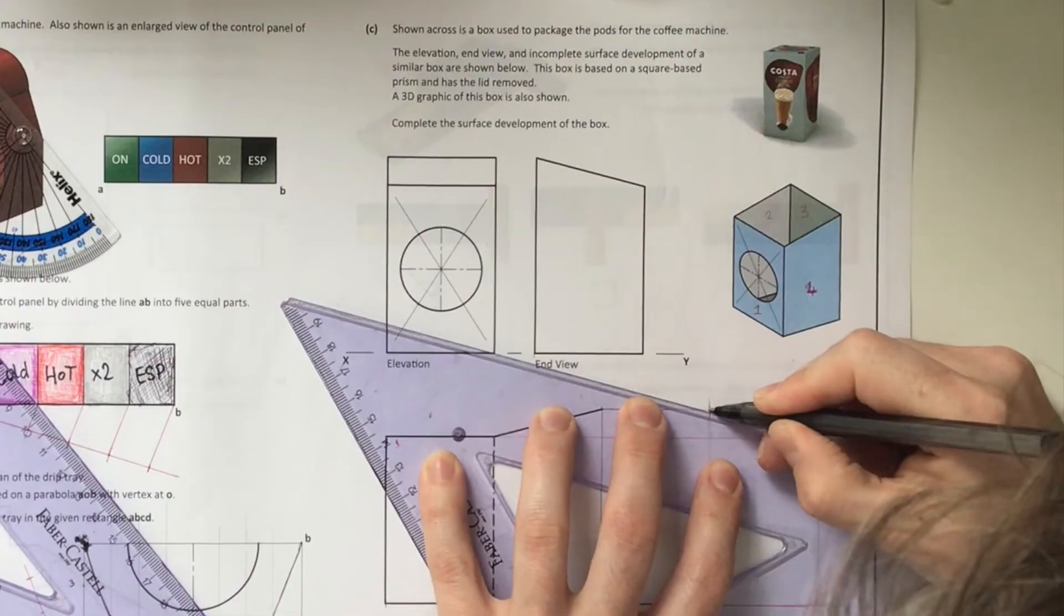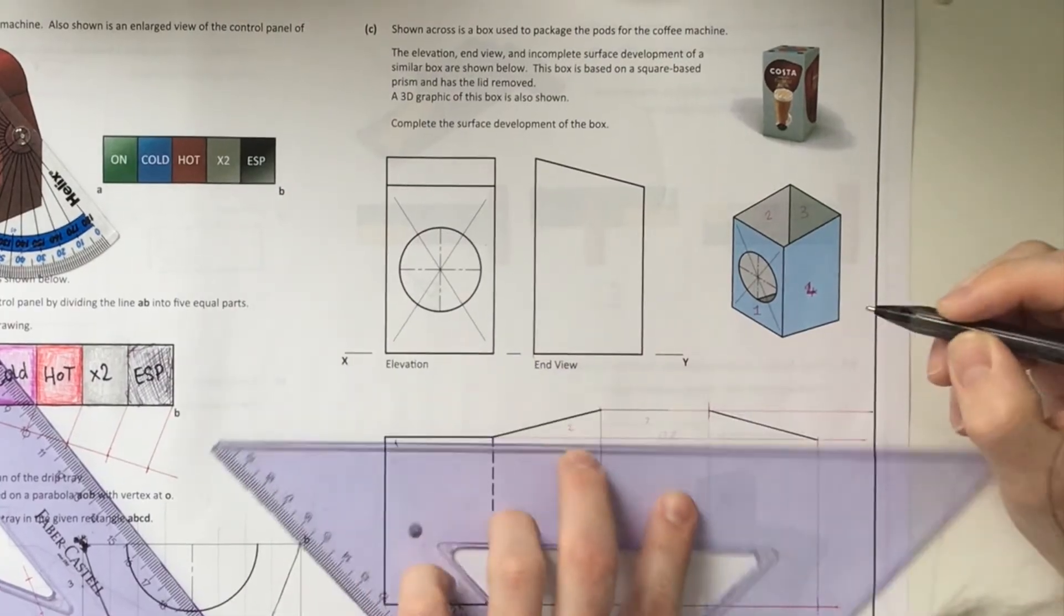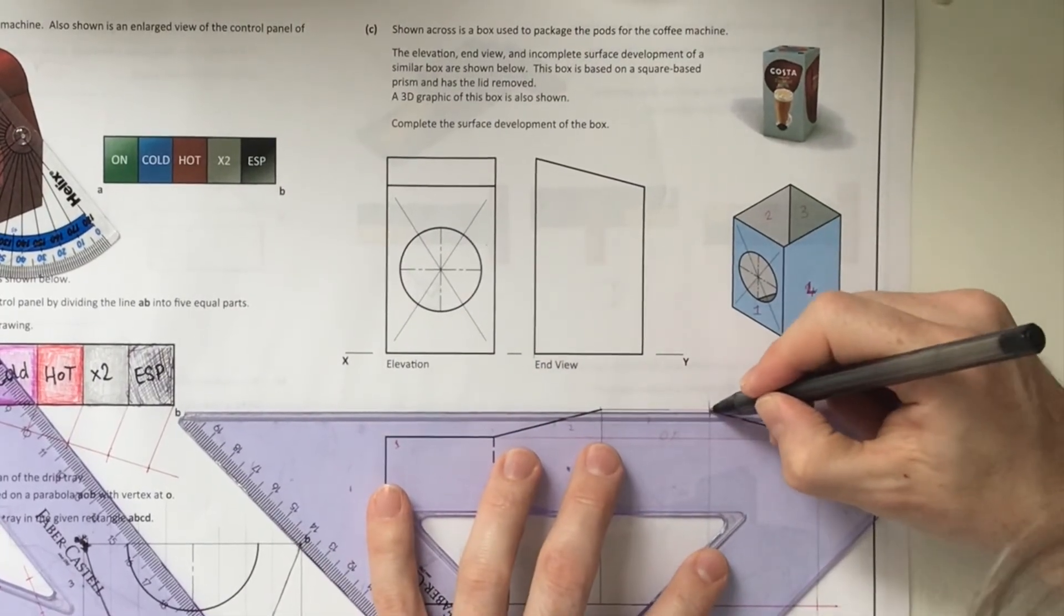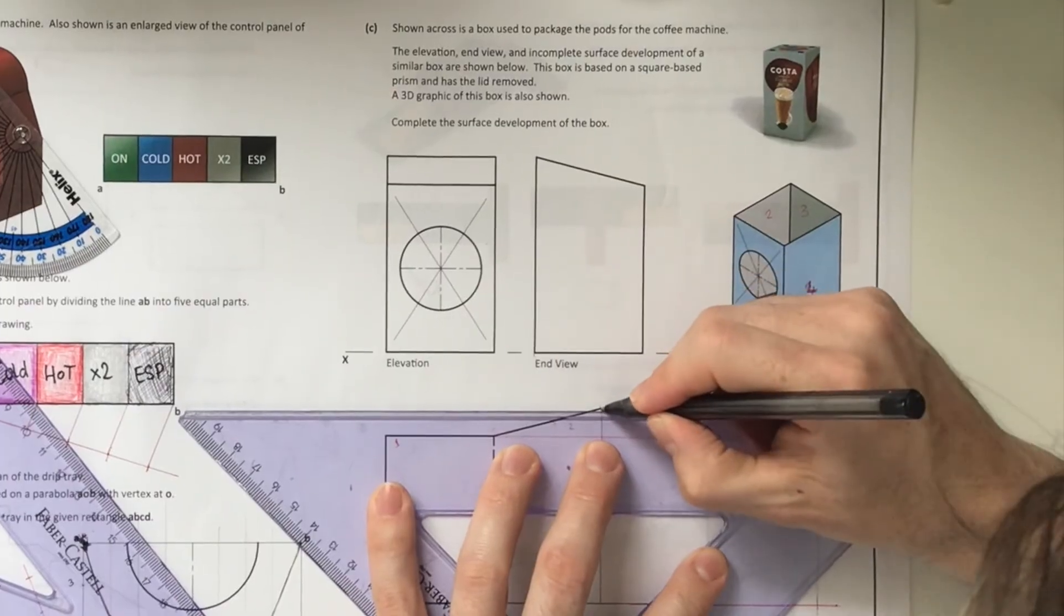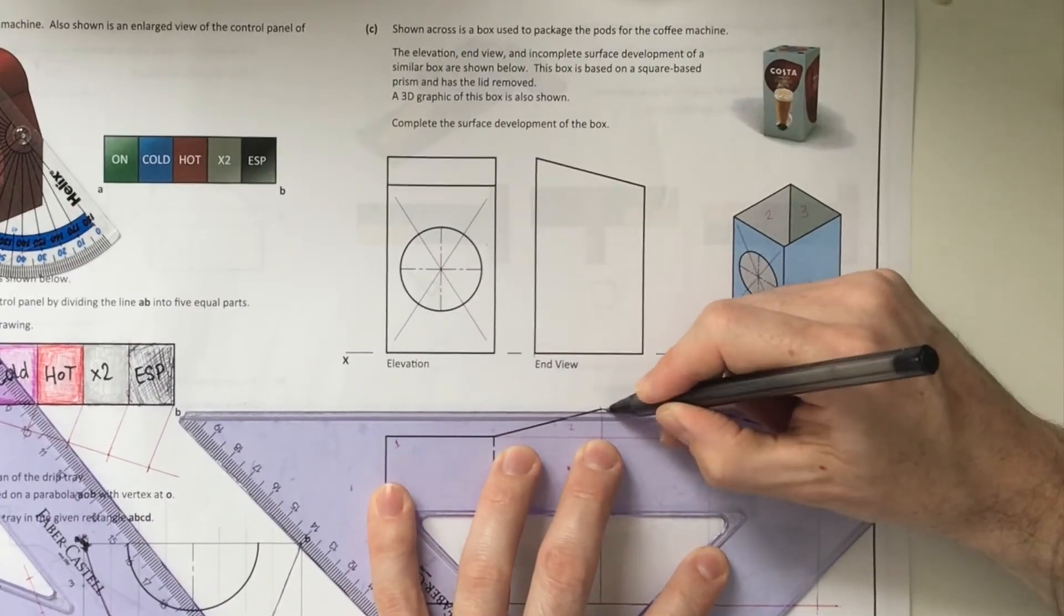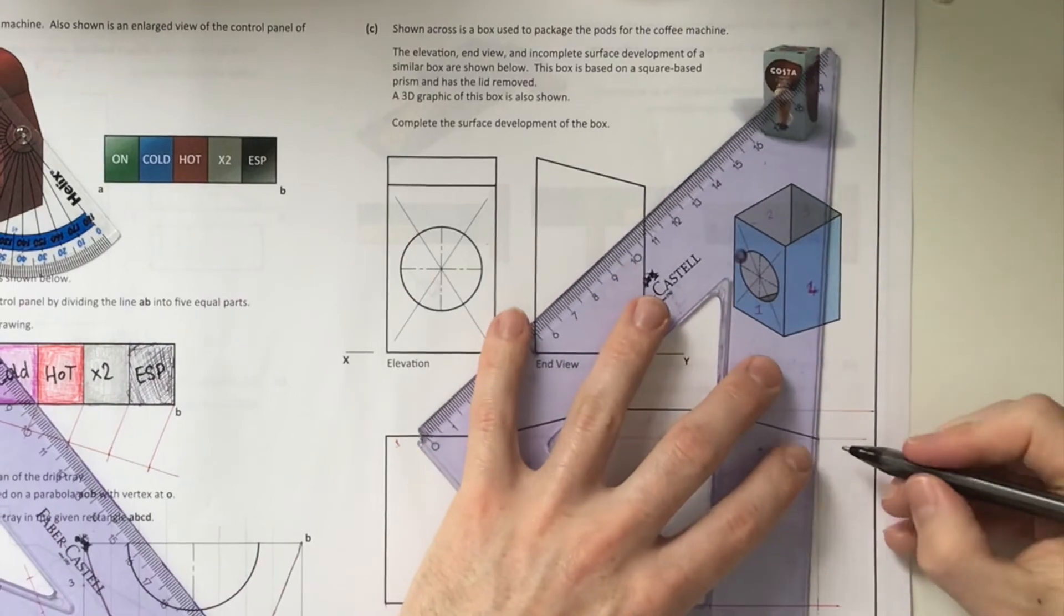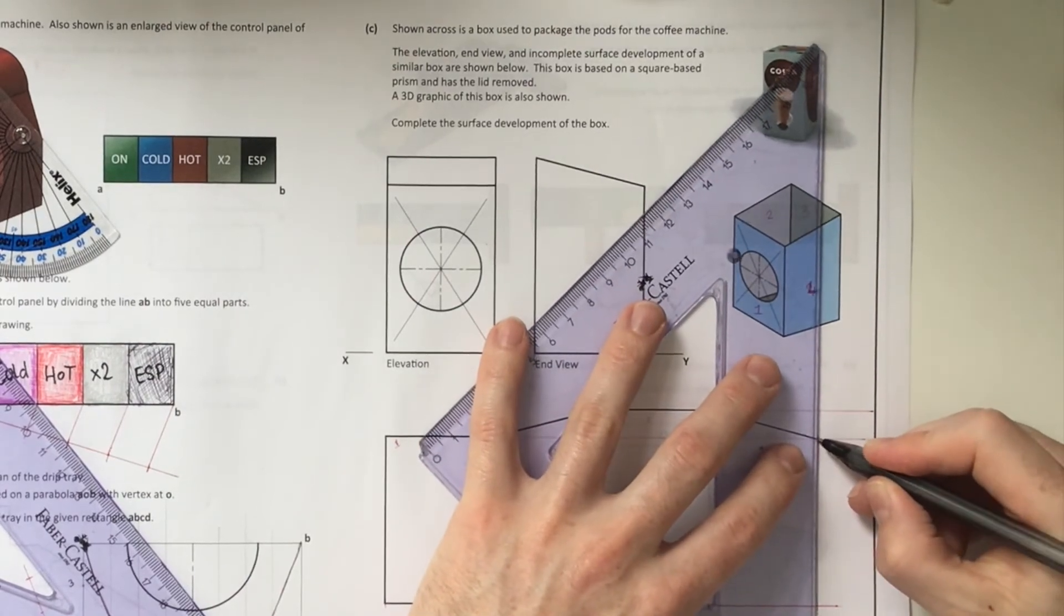At the top of surface three, the slant inside of surface four, the vertical line of surface four, and then the whole base of your item.